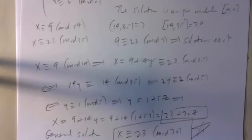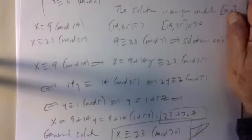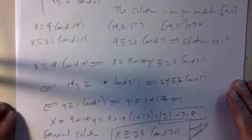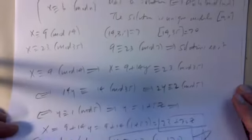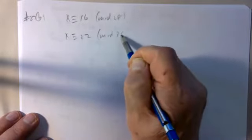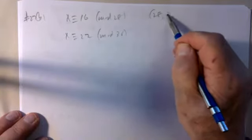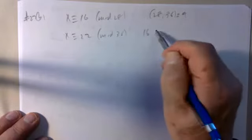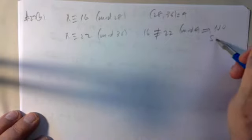Problem 27b: x ≡ 16 mod 28, x ≡ 22 mod 36. gcd(28, 36) = 4. Check: 16 mod 4 = 0 but 22 mod 4 = 2, so 16 ≢ 22 mod 4. Therefore there is no solution to this system of congruences.